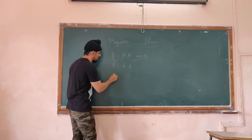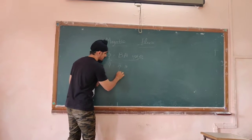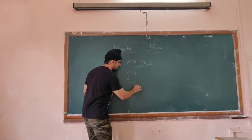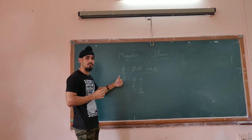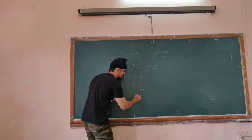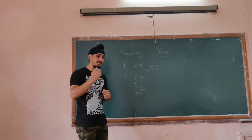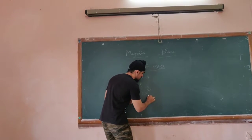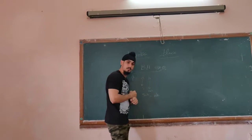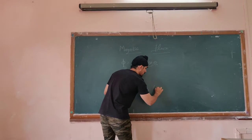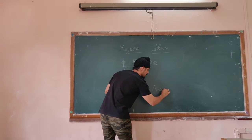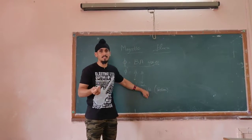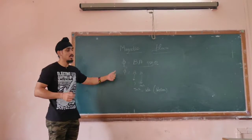If we want to write a unit for this, B can be said as Tesla, because Tesla was the scientist associated with this, and A is meter squared. So the unit of magnetic flux will be Tesla meter squared. Tesla meter squared doesn't ring up well, so let's put it in something we know: Tesla meter squared is also known as Weber, always denoted by Wb. This is the SI unit of magnetic flux.